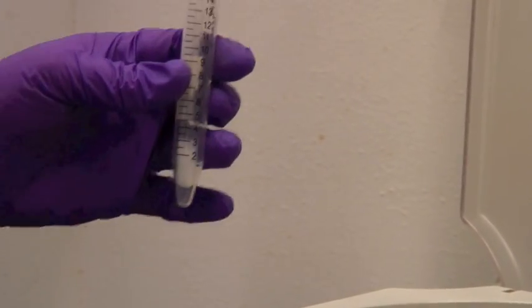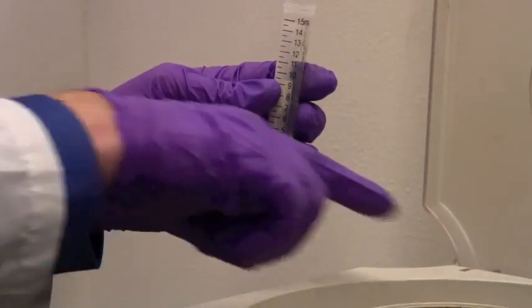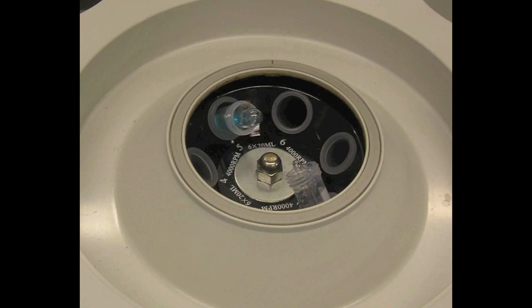Now, a centrifuge has six slots in it, and they're numbered one through six. Try and remember which one is yours because they all look the same. You will get confused.